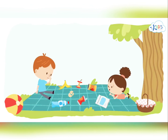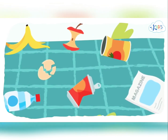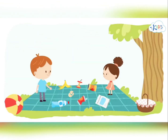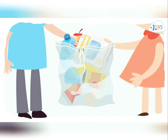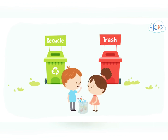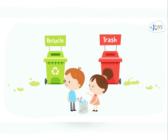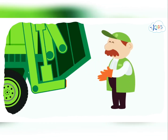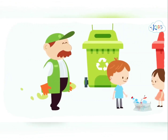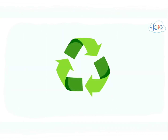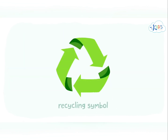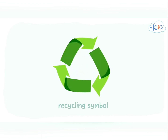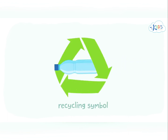I sure enjoyed lunch today, but look at this mess. We need to clean up. Let's find the trash bin. Wait a minute. There are two different trash bins, and one of them has a picture on it. What do you think it means? I don't know. I'm so confused. Oh, don't worry. It's really quite simple. This is called the recycling symbol. Recycling? What does that mean, Mr. Sammy?